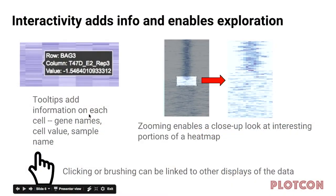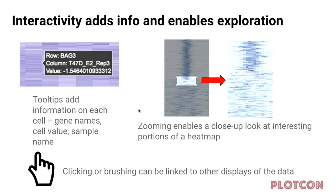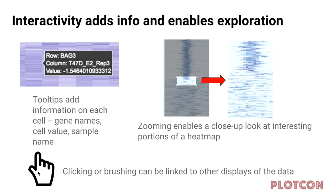Zooming can also be really helpful because any given row of this heat map might be pretty small and can be hard to figure out what's going on. So you can get a closer-up look. Additionally, in terms of higher-order interactivity, you can potentially add click or brush events that enable you to move to a different view of the data.